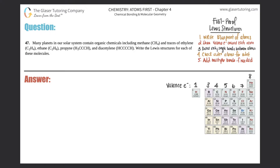Number 47: many planets in our solar system contain organic chemicals including methane (CH₄), traces of ethylene (C₂H₄), ethane (C₂H₆), propyne (H₃C-C≡C-H), and diacetylene (HCCCCCH). Write the Lewis structures for each of these molecules. All right, so let's start from the top — we'll go with methane.